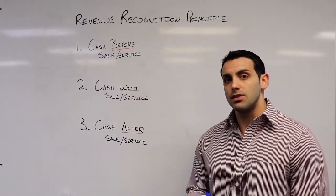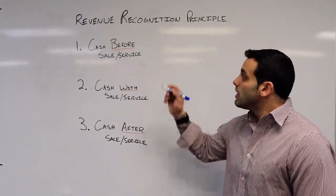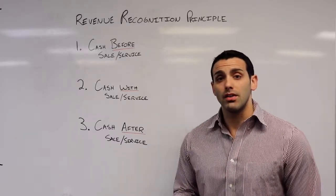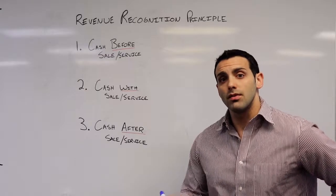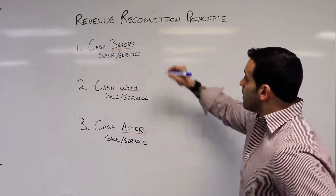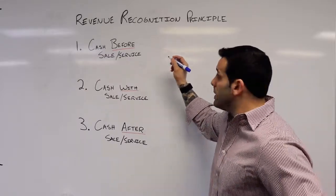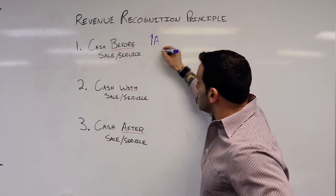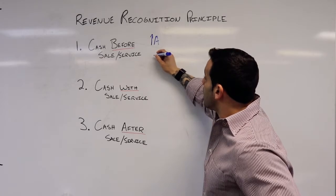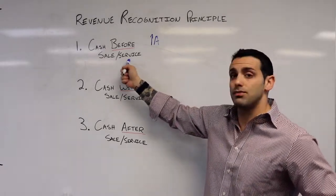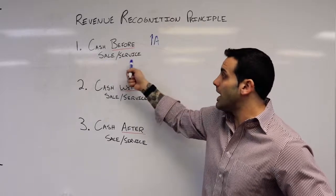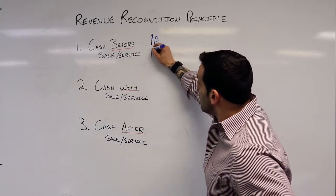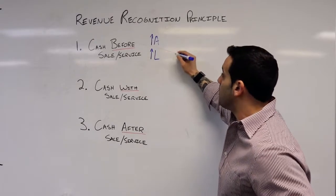So we have three situations that can exist. The first, we receive cash before the sale or service is performed. So in this example, and it'll be a two-part entry, our assets increase. However, we do not recognize revenue because we have not performed the sale or service yet. So this also increases a liability.